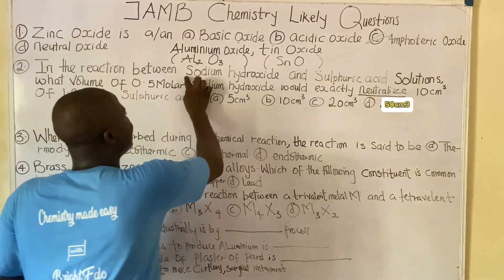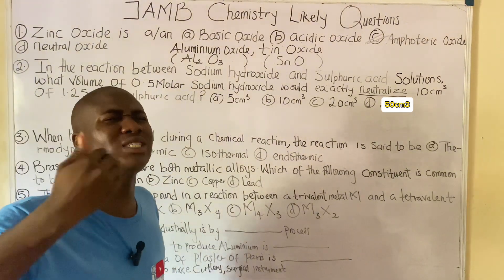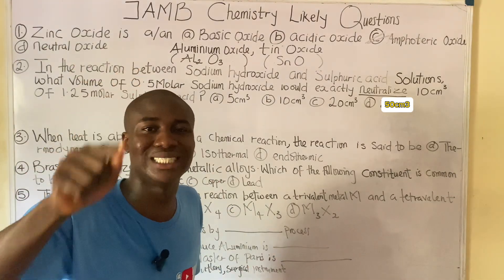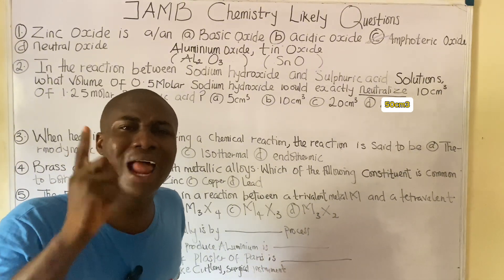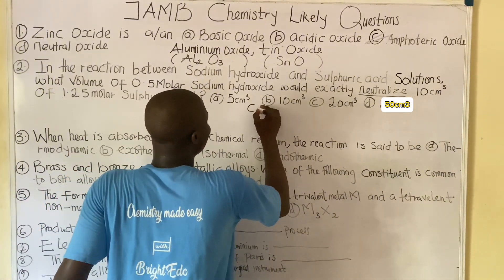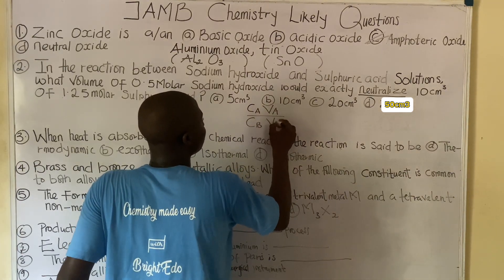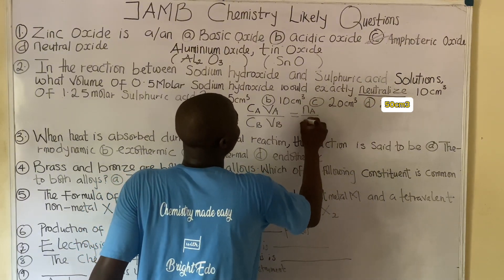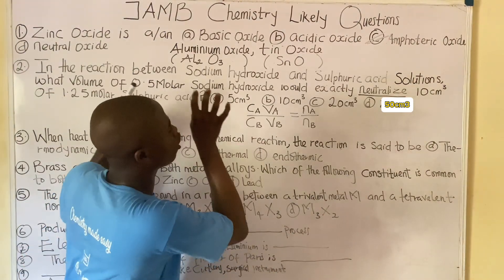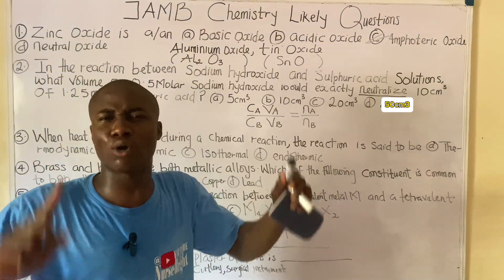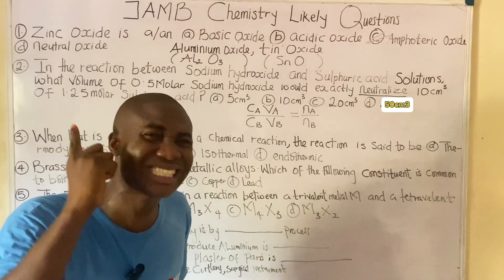For neutralization questions involving an acid and a base, we use an important formula from quantitative analysis under titration: CₐVₐ / CᵦVᵦ = nₐ / nᵦ. Whenever you see 'neutralize' with an acid and a base, this is the formula to use.